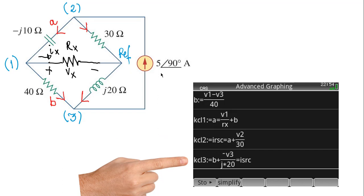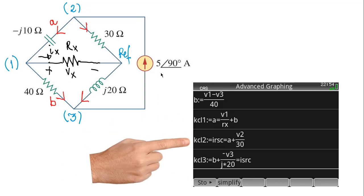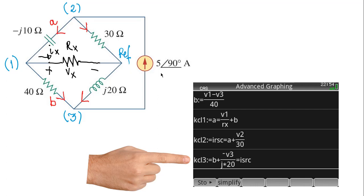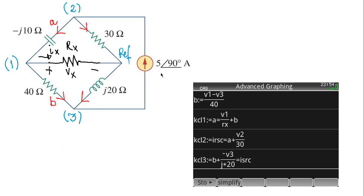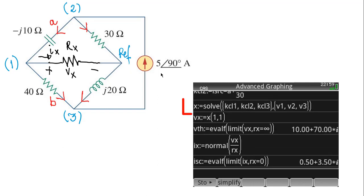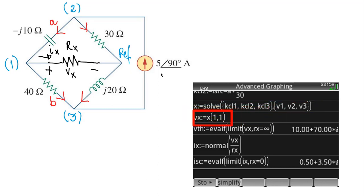We write the three KCL equations for nodes 1, 2, and 3. Note that I made a typo writing the current source in the middle equation in KCL2, but I fixed it before pressing the key for the solution. I solve the system of those three equations and find V1, V2, and V3. V1 is V_X, the one I'm interested in.